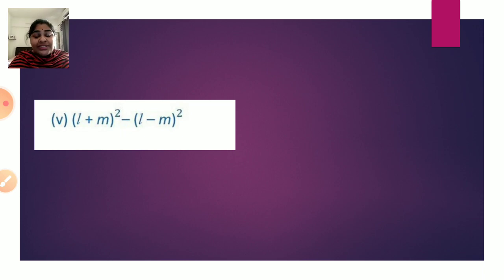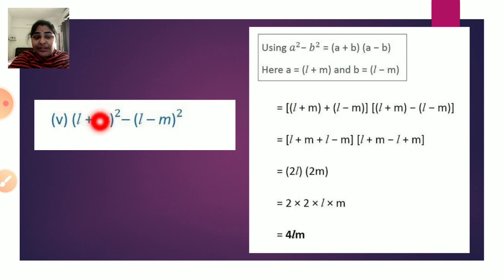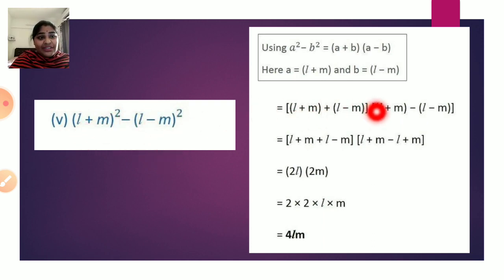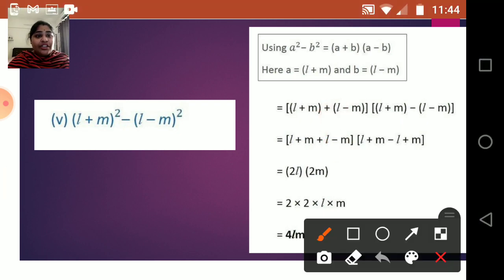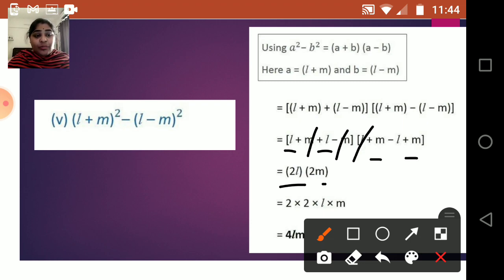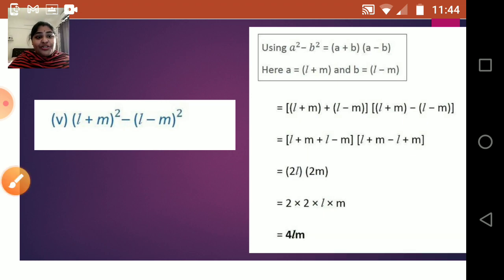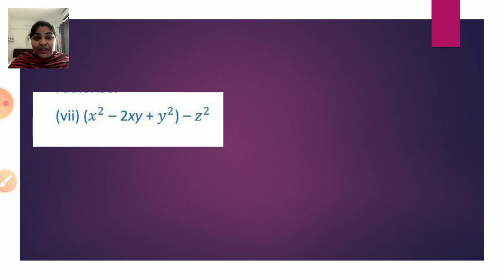The sixth sum is (l + m)² - (l - m)². This is already in the form a² - b² where a = (l + m) and b = (l - m). So it equals (a + b)(a - b) = [(l + m) + (l - m)][(l + m) - (l - m)]. Simplifying: l + m + l - m = 2l, and m + m = 2m (with l's cancelling), giving 2l × 2m = 4lm.